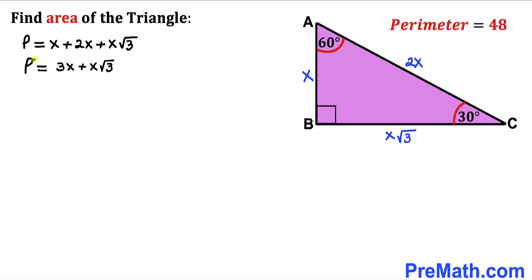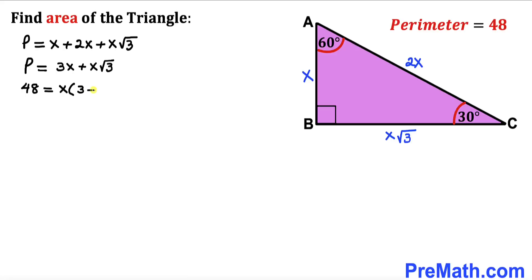We know our perimeter p is 48, so substituting 48, we get 48 equals 3x plus x times square root of three. Factoring out x, this can be written as x times the quantity three plus square root of three.